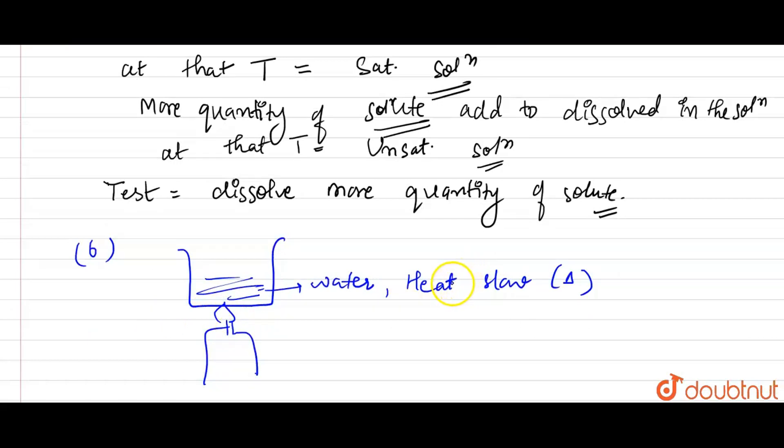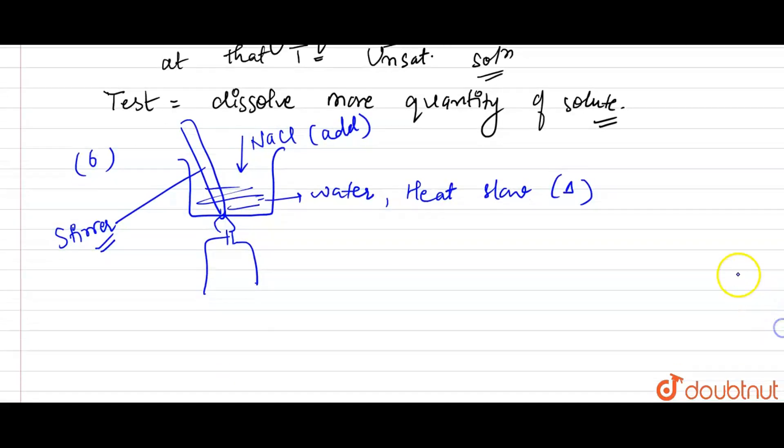Now we add sodium chloride NaCl to the hot water with a spoon and stir it with a glass rod continuously. This is a stirrer here. We will stir it continuously so that sodium chloride will dissolve in the water. We will add sodium chloride until the saturation point comes, so that no more sodium chloride is dissolving in it.